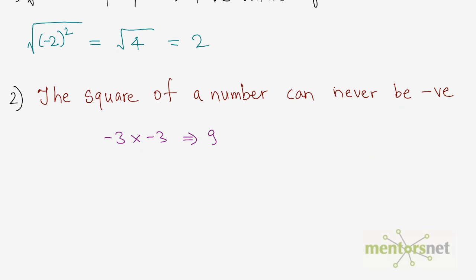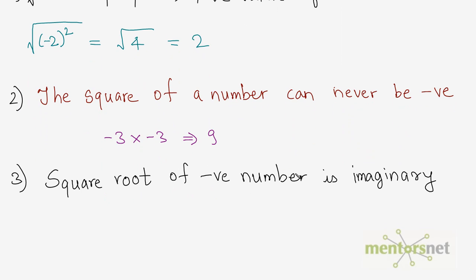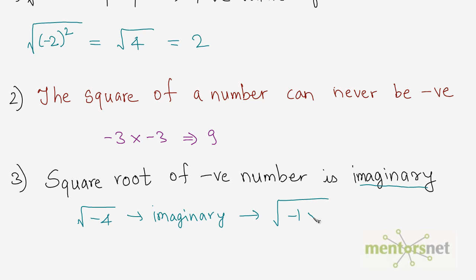The third property: the square root of a negative number is imaginary. That means if you take the square root of a negative number — for example negative 4 — the answer is imaginary; it is not a real number. If you try to solve this, under root of minus 4 can be written as minus 1 times 4, and this can be written as under root of 4 times under root of minus 1, which is 2 root minus 1. So the root of minus 4 is 2 root minus 1, and this minus 1 is an imaginary number. You cannot calculate the exact square root of a negative number.